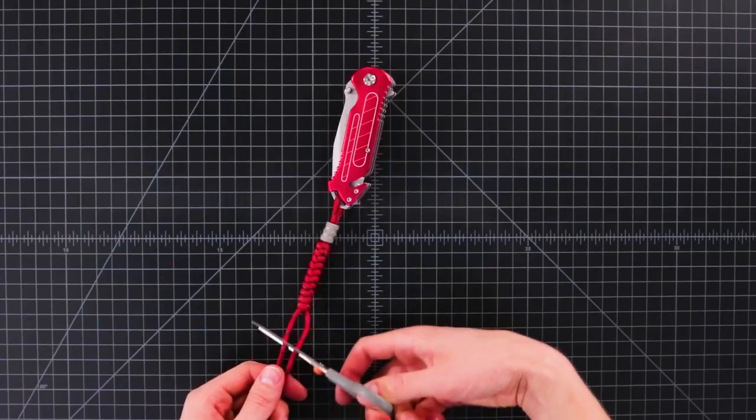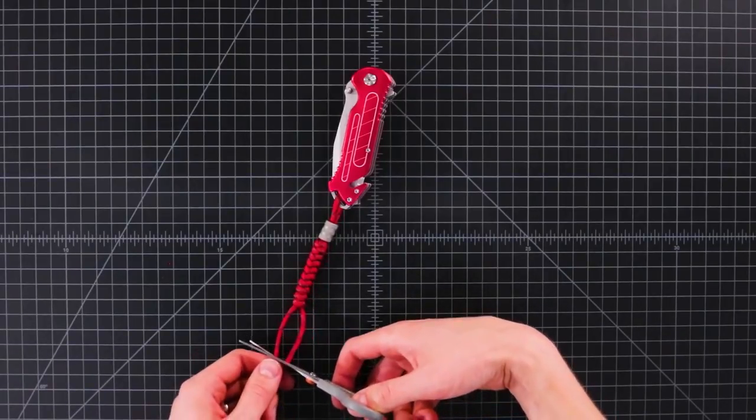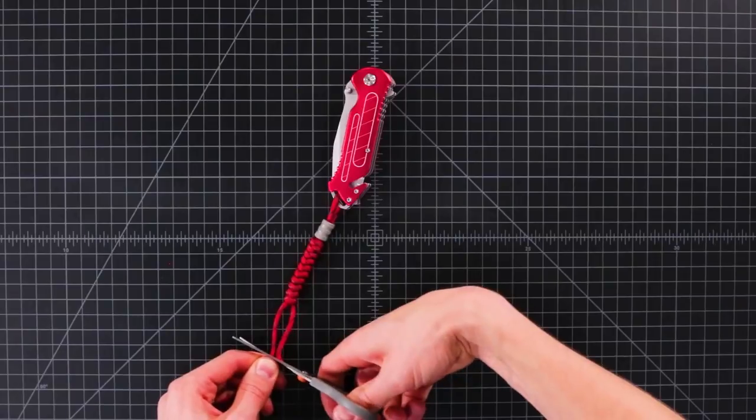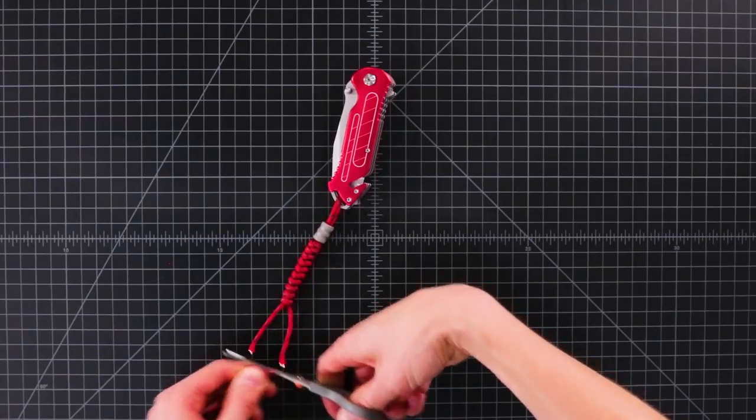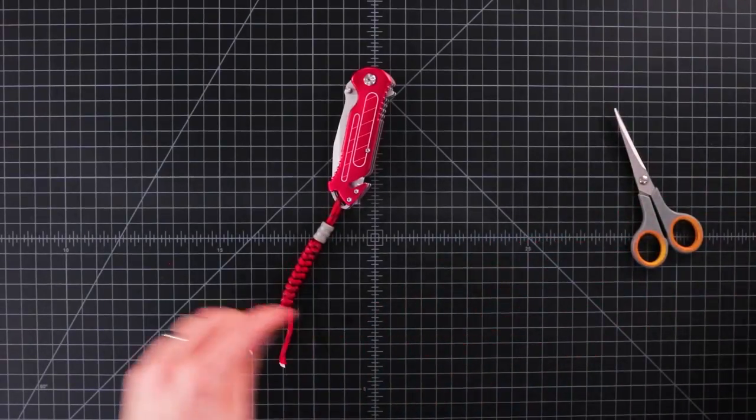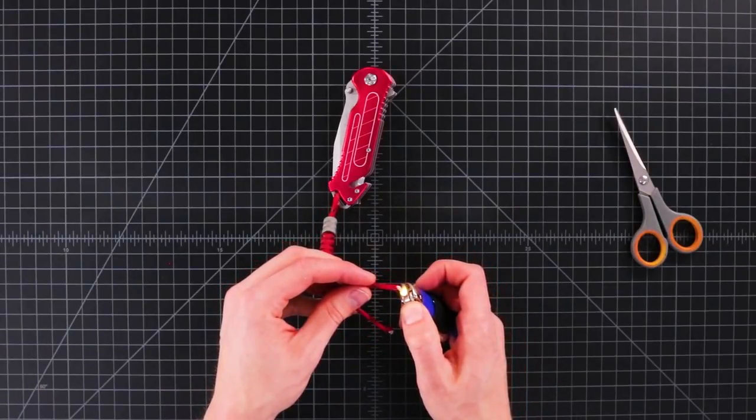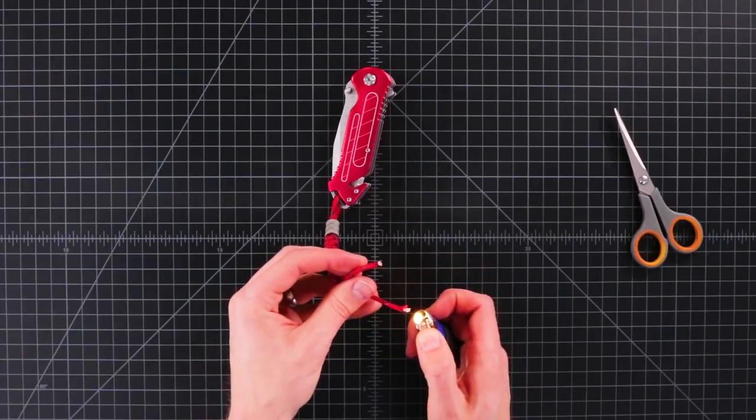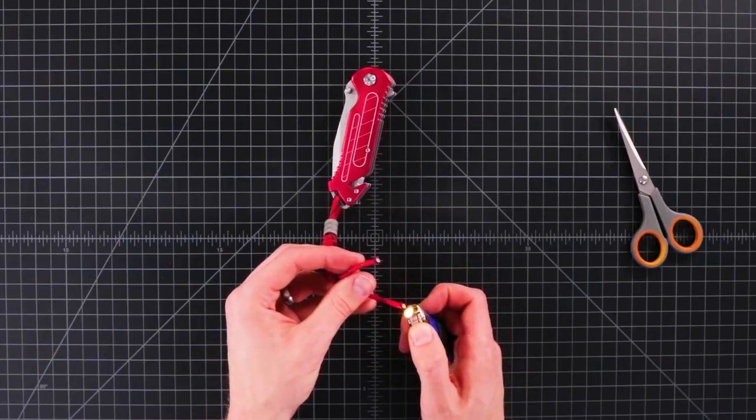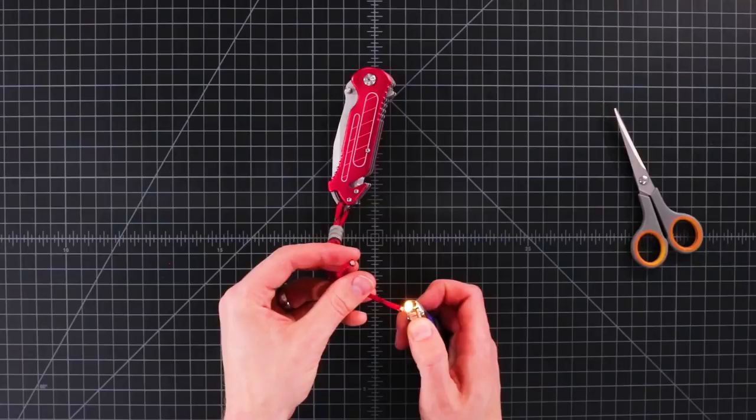And then I'm going to cut my ends. You can leave the tails as long as you want, but I'm going to leave them about two inches. And then I'm just going to melt them down. This is just so that they don't fray.